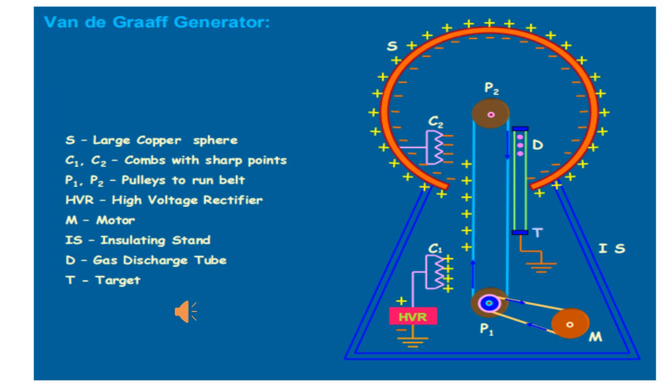The light charges are repelled by the charged point of conductors, causing discharging action known as corona discharge or action of points. The spread charges moving with high speed cause electric wind. Opposite charges are induced on the teeth of the collecting comb, and opposite charges are also induced on the outer surface of the collecting sphere or dome.